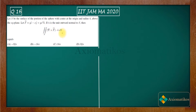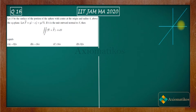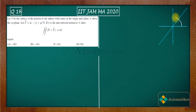Firstly I will draw this 3D region that is given to us, and then we will talk about the remaining things we have to do. So this is your three-dimensional plane. Now a sphere above the XY plane on this three-dimensional plane will look like this.